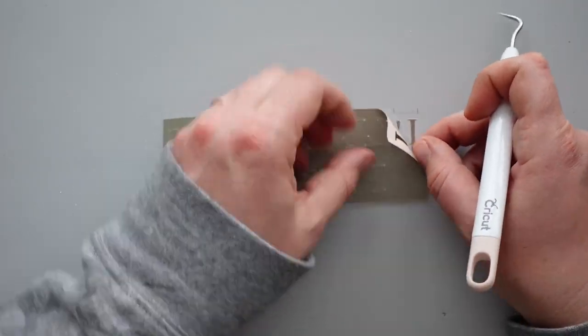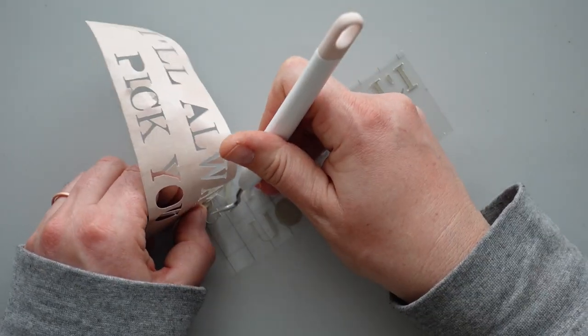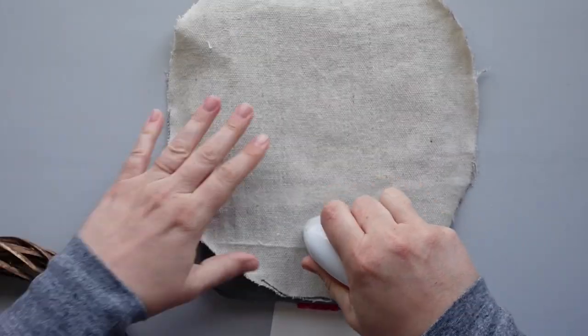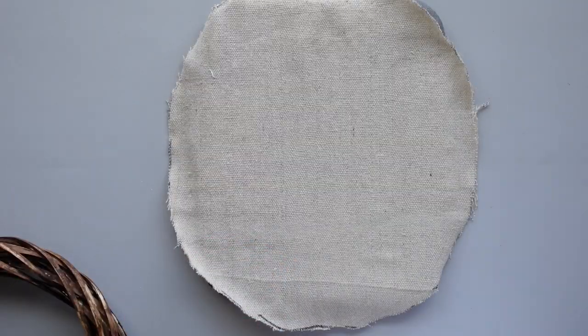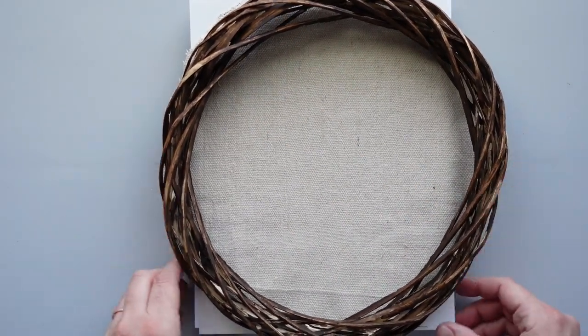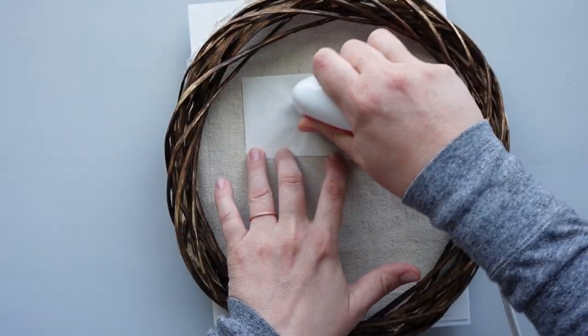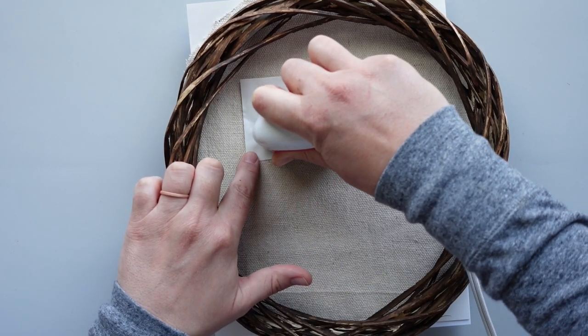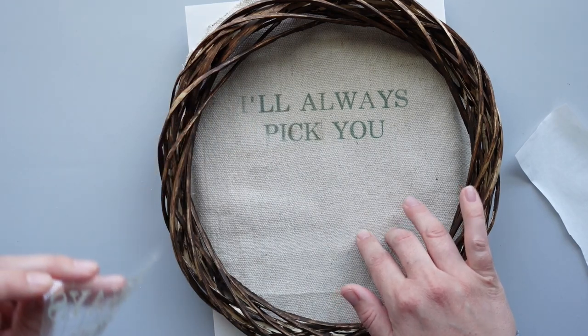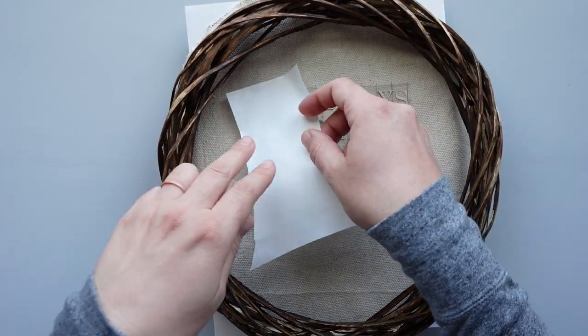I used my Cricut machine to cut the words 'I'll always pick you' out of infusible ink and weeded out the excess. Next, I spread my canvas on the EasyPress mat and used my EasyPress Mini to preheat the cloth. Then I put a sheet of cardstock under the canvas to protect the mat from color transfer. I placed the wreath on the canvas for reference and arranged the words face down near the top. I covered the text with butcher paper and used my EasyPress Mini to press the infusible ink into the canvas. After peeling up the words, I realized that the letters I and P needed to be darker, so I carefully placed the infusible ink back down and went over those two letters a bit longer.